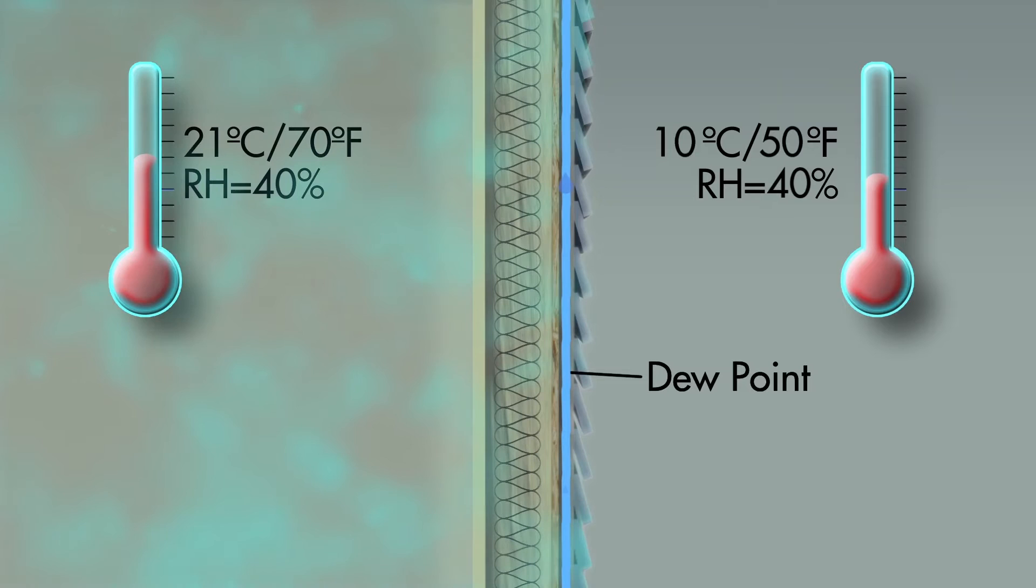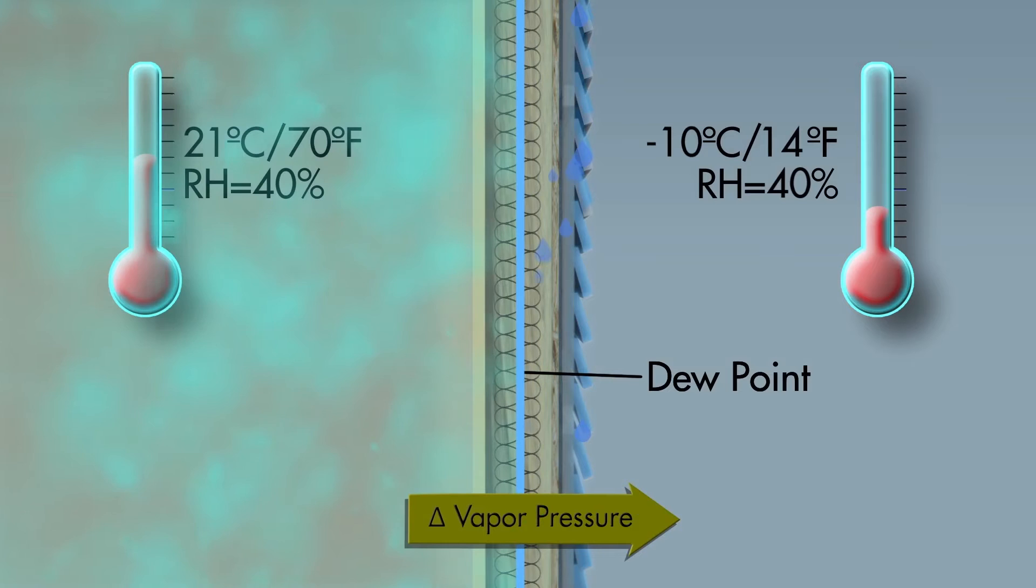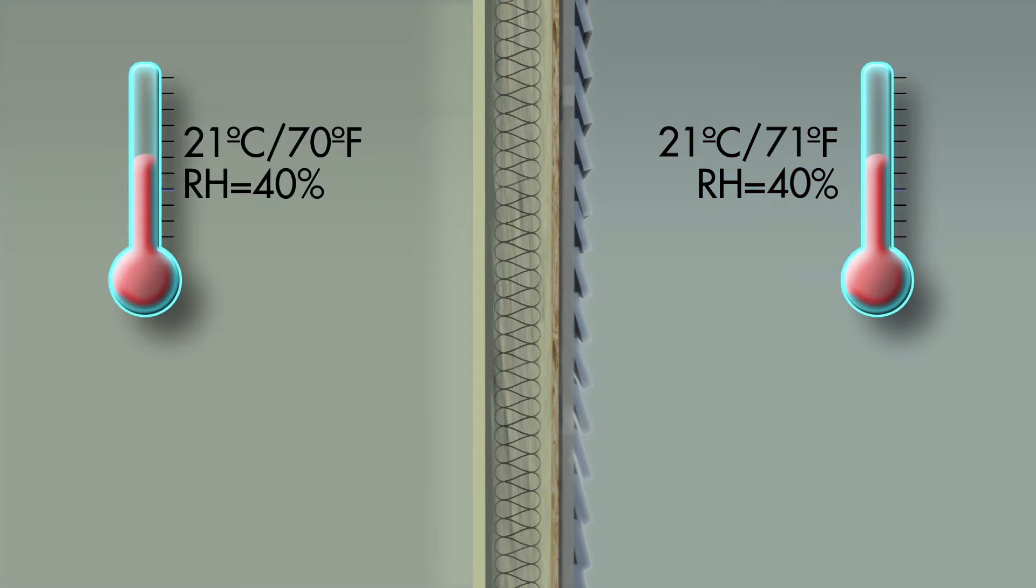Similarly to how different storm fronts meeting can cause a tornado, the dew point occurs when moisture in the air meets a temperature that causes it to revert to water. If that point occurs in walls where the water has no place to escape, then even when there are no extreme temperatures occurring inside or outside, the concealed moisture that was forced into the walls continues to wreak havoc on the enclosure structure.